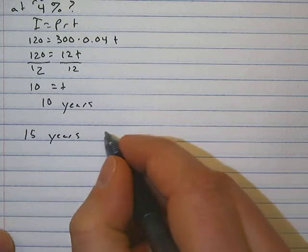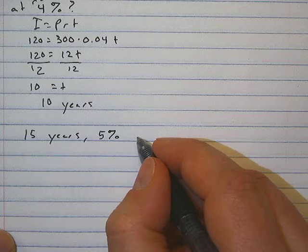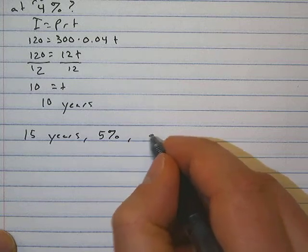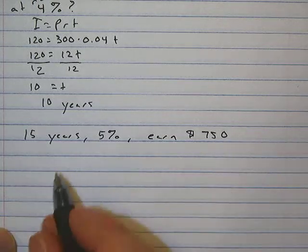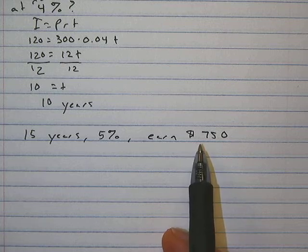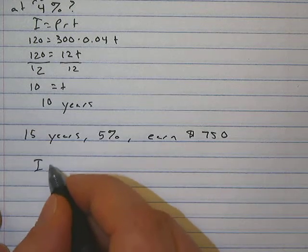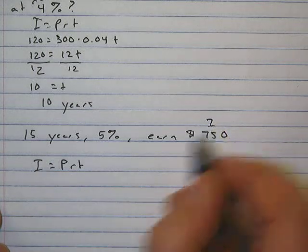This one I want to write out as a word problem. We'll just say 15 years, 5 percent, and we earn $750. So on this one by looking at that we have the time, the rate, and earn $750. So we're looking for the principal.